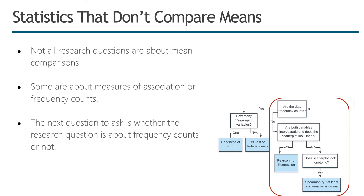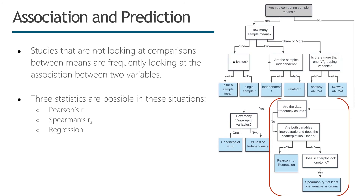Moving down the flowchart to studies where you're not comparing means — you answered no to the original question about comparing means. Not all research questions are about mean comparisons; some are measuring association or frequency counts. The next question is whether the data are frequency counts or not. If your answer is no, there are three possible statistics: Pearson's R, Spearman R, or regression.